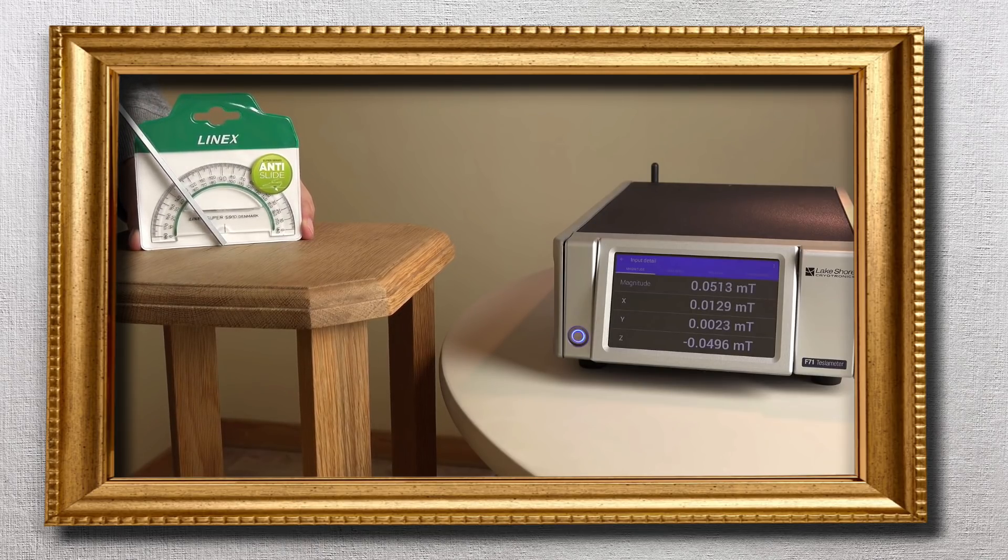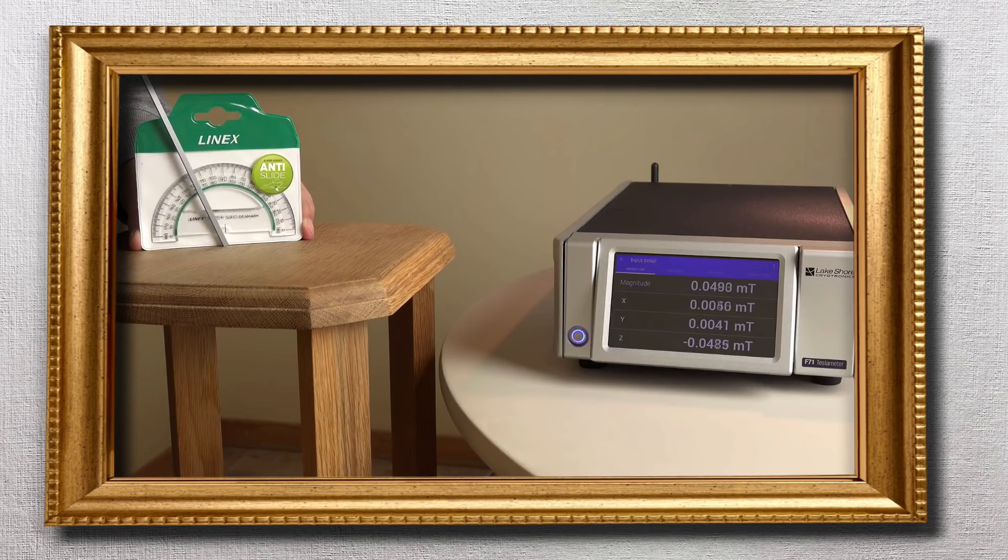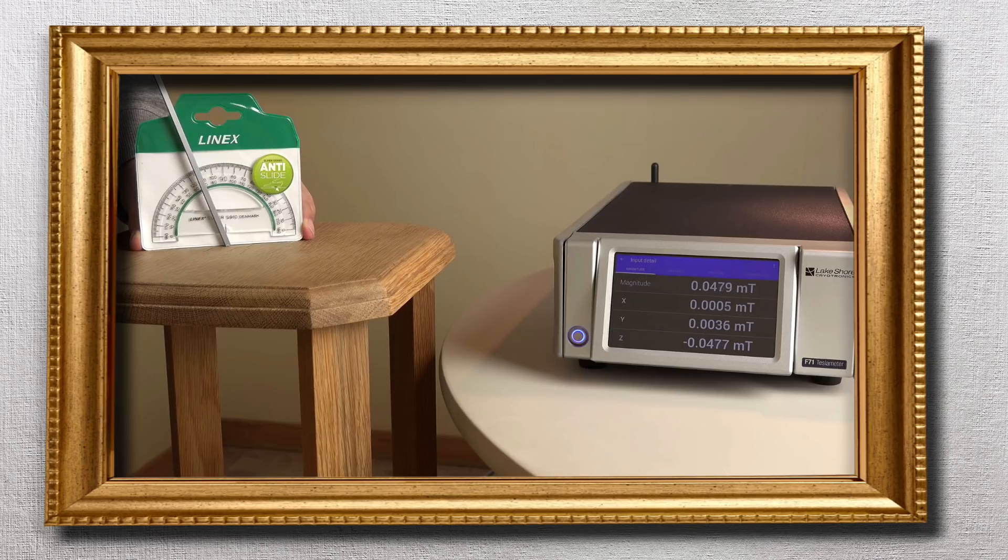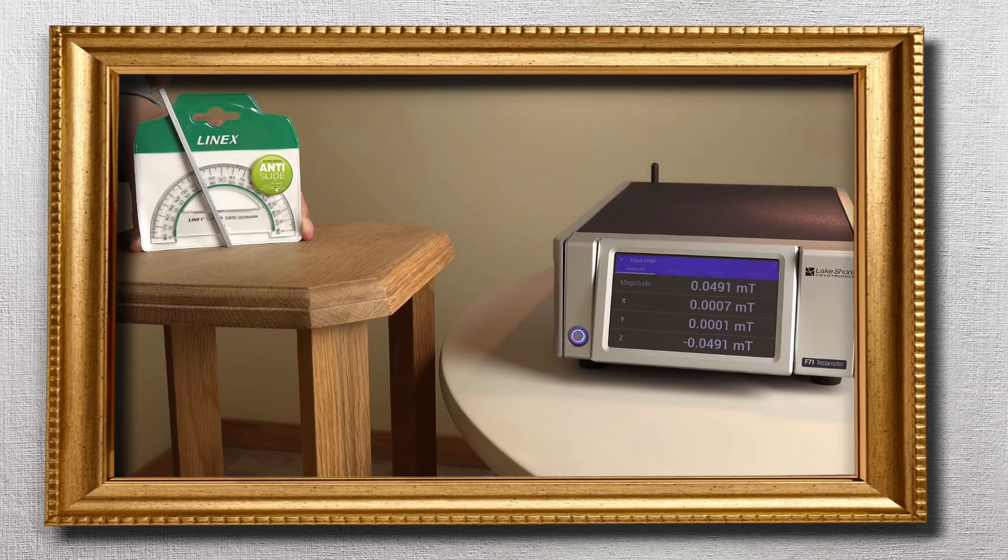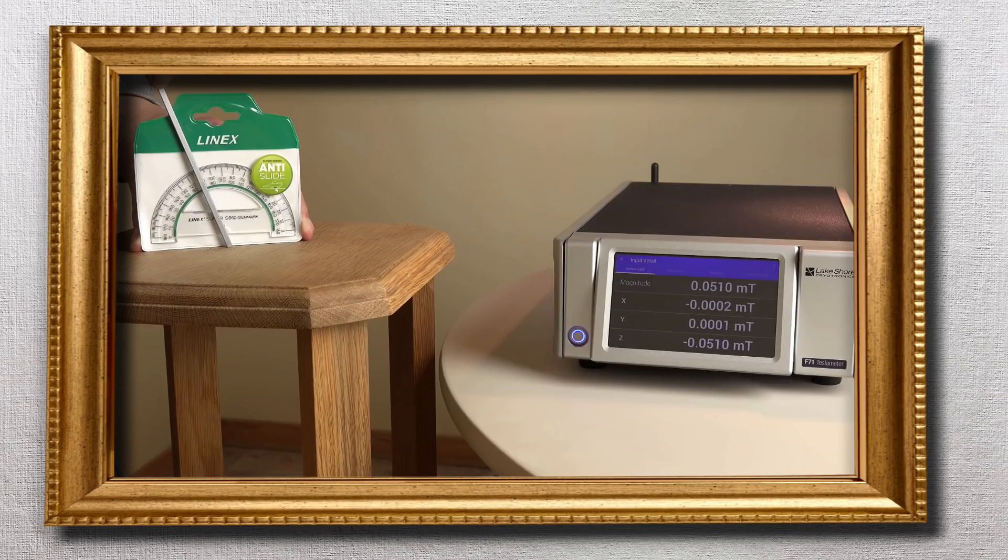So does the earth's magnetic field actually point down as Dubé says it would if the earth is round. Yes. Yes it does. Dubé has managed not just to fail to give up proof for the flat earth, but he has also provided evidence for the earth being round. Thanks, Eric.